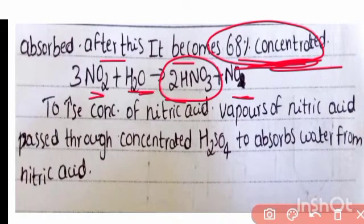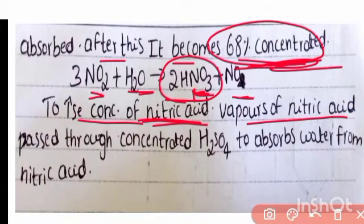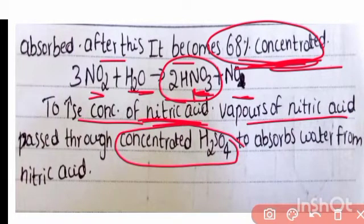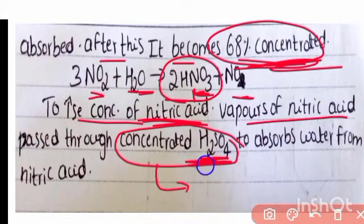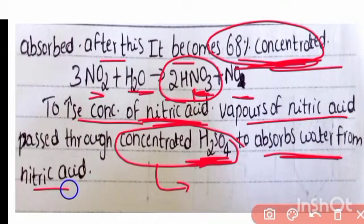To increase the concentration further, the vapor of nitric acid is passed through concentrated H₂SO₄. Concentrated sulfuric acid acts as a dehydrating agent — it absorbs water from the nitric acid, making the nitric acid more concentrated.